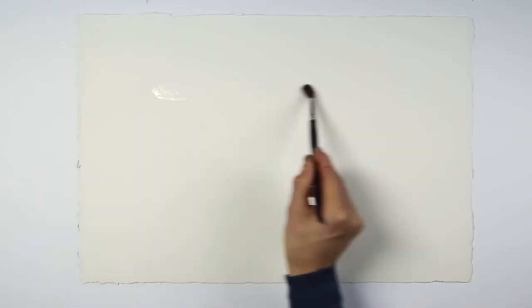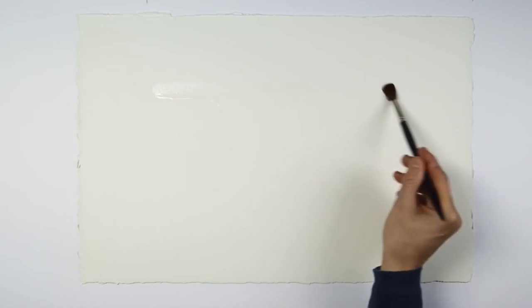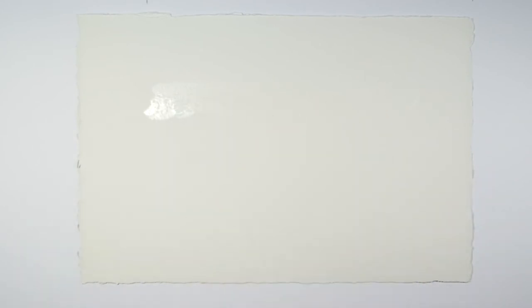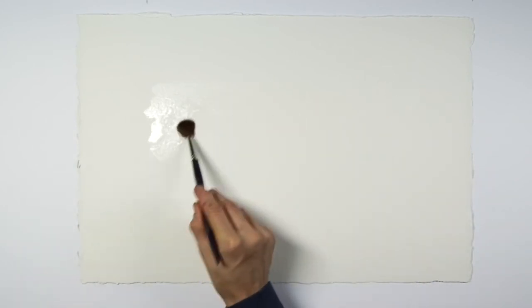I'm now wetting some of the paper here with water. You'll see why in a moment. It may not be obvious, but my work surface here is tilted at about 30 degrees.